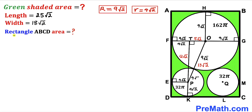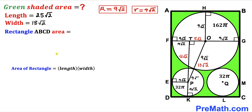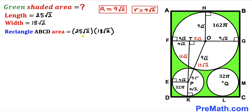Now we calculate the area of rectangle ABCD. Using area = length × width, we get area = 25√2 × 18√2 = 900. Thus the rectangle ABCD area is 900 square units.